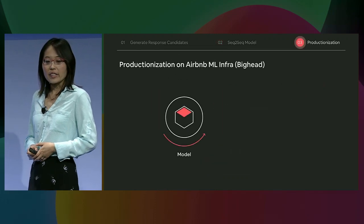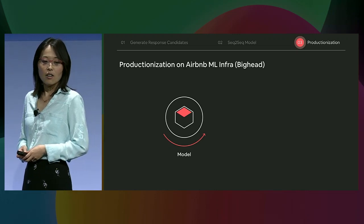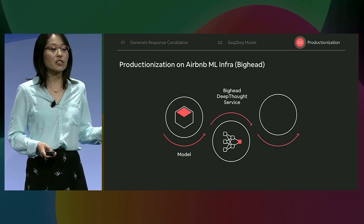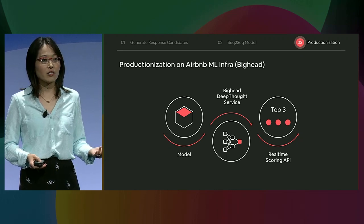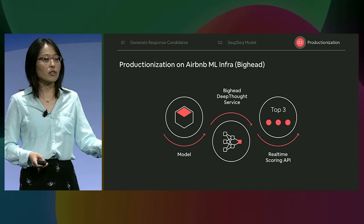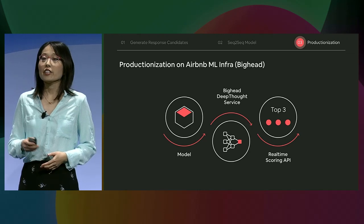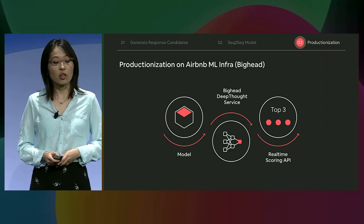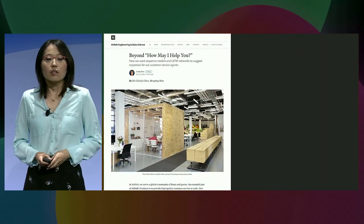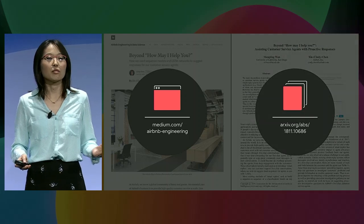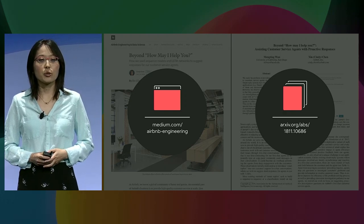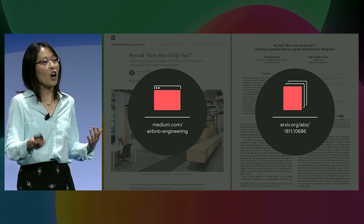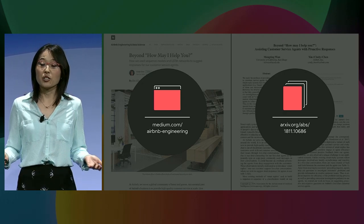PyTorch provides a lot of state-of-the-art technologies for us to accomplish this task, including various attention mechanisms and beam search, and the model trained using PyTorch is production-ready. Using PyTorch has significantly sped up our model development cycle, and there is an active community in PyTorch around developing models for machine translation and conversational AI problems. The last stage is actually to productionize it. Airbnb's machine learning infrastructure, BigHead, provides a service called Deep Thought, which will deserialize the model and turn it into a real-time scoring API. When customers send a message, this message goes to this API to get recommendations back in real-time, which appear on the agent tool. We are open-sourcing the BigHead framework.